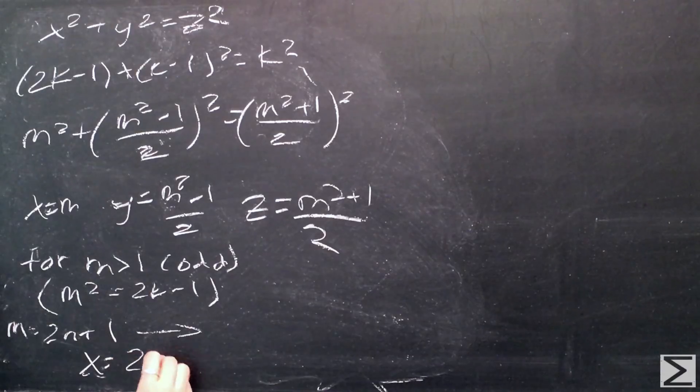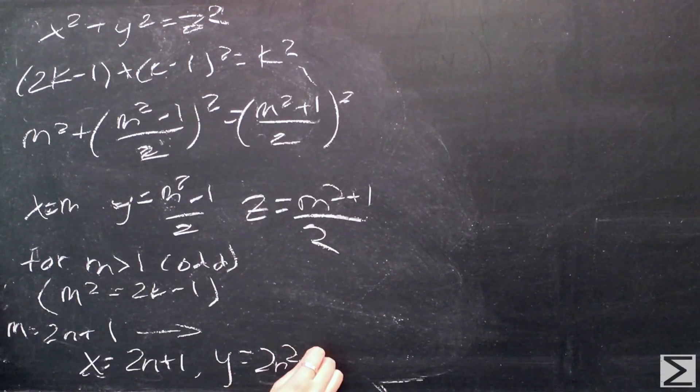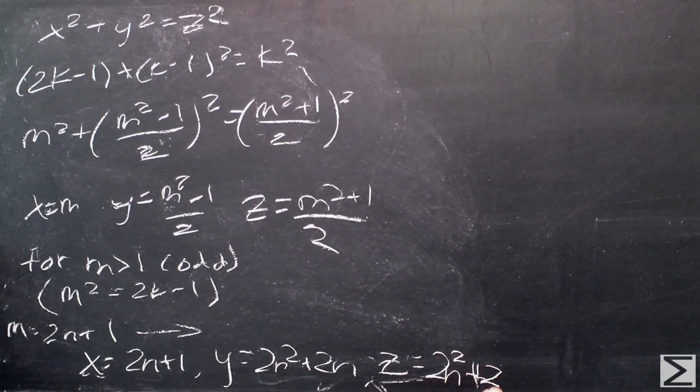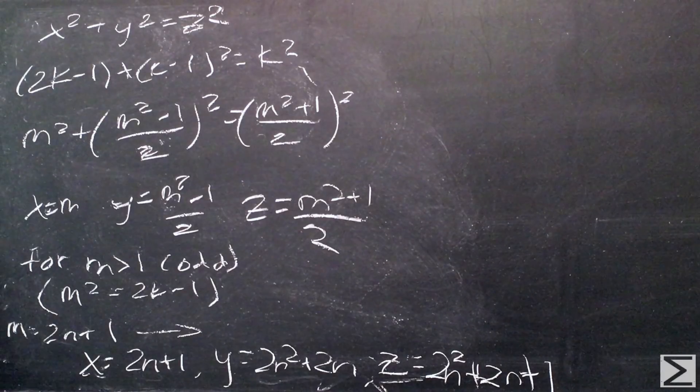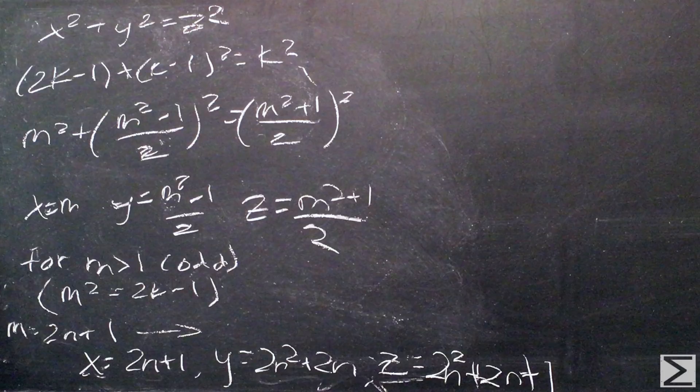We know M must be odd because 2k minus 1 is odd. If we say that M is equal to 2n plus 1, what we'll see is that x is equal to 2n plus 1, y is equal to 2n squared plus 2n, and z is equal to 2n squared plus 2n plus 1, which is the result that Pythagoras supposedly got.